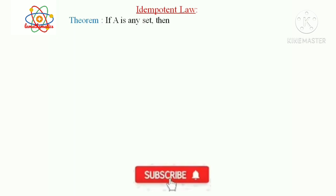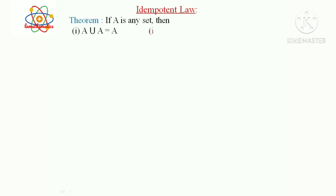If capital A is any set, then: first, A union A equals A; second, A intersection A equals A. These are trivial results.